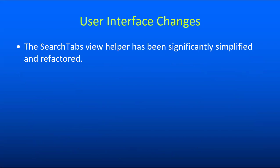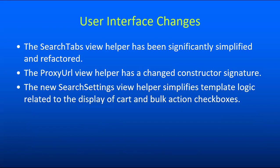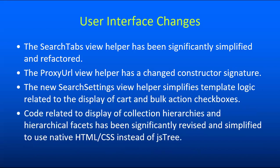Some other changes include simplification and refactoring of the search tabs view helper — so in the relatively unlikely case you've customized that, a little work may be needed. We've also changed the constructor signature of the proxy URL view helper to add the EZProxy prefix check functionality. We've added a new view helper called search_settings, which helps to simplify template logic related to displaying sort and bulk action checkboxes. Code related to the display of both collection hierarchies and hierarchical facets has been significantly revised to get rid of the JSTree library and instead use native HTML and CSS.